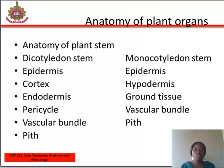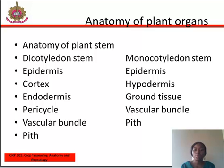The anatomy of plant stems will also be discussed in two ways using dicotyledon and monocotyledon stems. Features of the dicotyledon stem include: 1. Epidermis — the outermost single-layered structure of the stem. 2. Cortex — in the dicotyledon stem, the cortex is divided into 3 parts: hypodermis, general cortex, and endodermis. Hypodermis is present just below the epidermis; it is a thick multicellular layer that provides additional support and is composed of collenchyma cells.